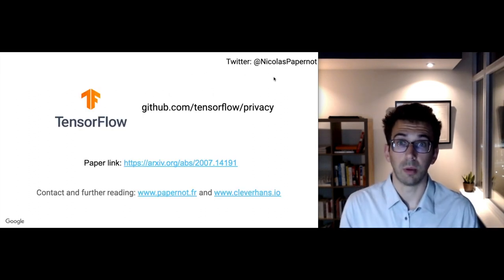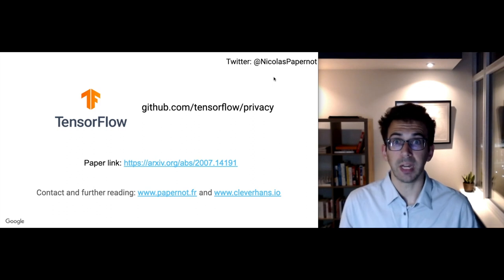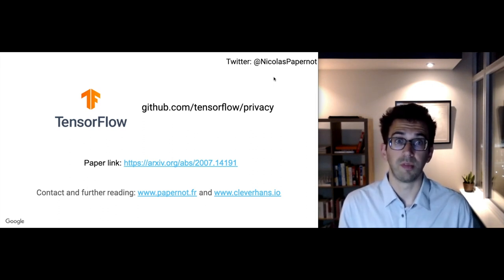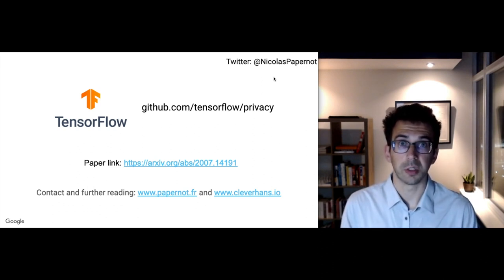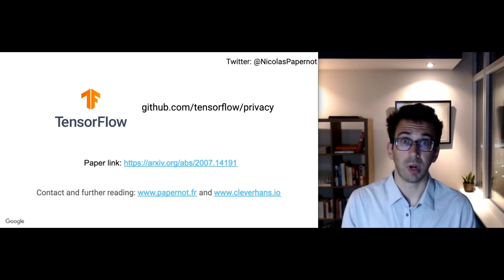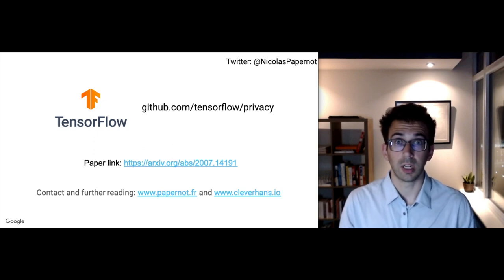I think that the key takeaway from this work is that rather than first training a non-private model and then later trying to make it private, we should bypass non-private training altogether and directly attempt to design architectures that are more amenable to be trained with privacy. Here we showed that the choice of activations matters a lot when training with privacy, but I suspect that other architectural choices will also help learning with privacy. With this, I'd like to thank you for your attention and encourage you to check out our library TensorFlow Privacy where you can find the implementations of our work. You can also find our paper online on arXiv and a blog post about learning with privacy on our blog cleverhans.io.